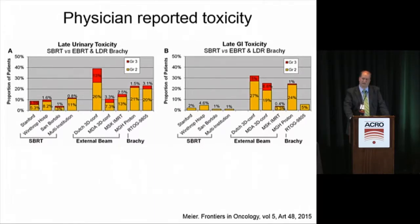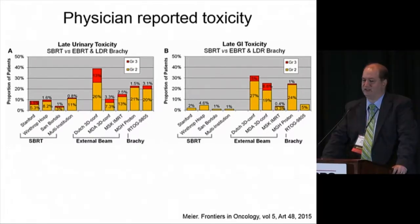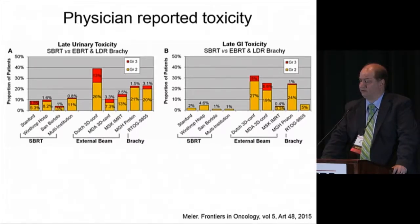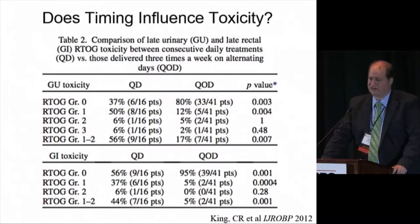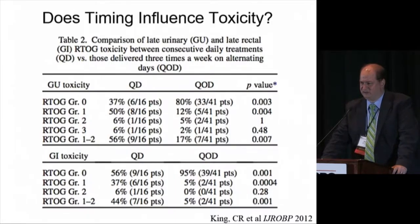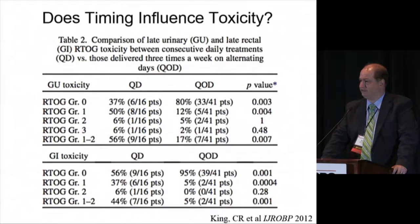Regarding toxicity, a study by Myers et al. pooled data from multiple SBRT studies compared to published external beam series including the Dutch randomized trial, MD Anderson randomized trial, Memorial Sloan Kettering IMRT experience, MGH proton experience, and brachytherapy from RTOG 9805. Late urinary toxicity is on the left and late GI toxicity on the right. In general, rates of toxicity with SBRT appear less than reported from most other series, though many of those series used older techniques.